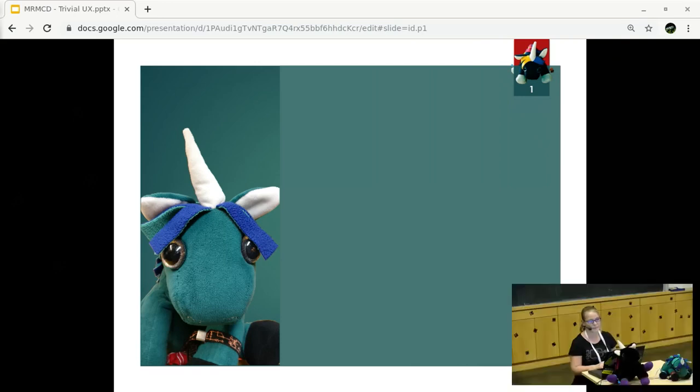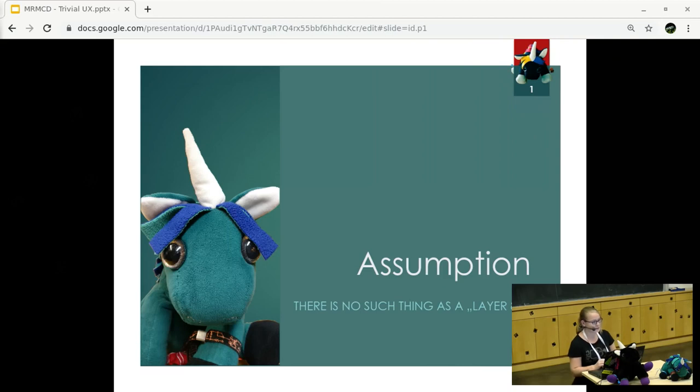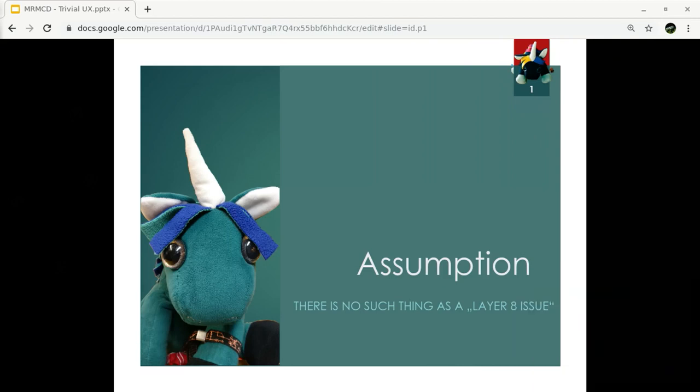So first of all, we've talked about the player, but now let's talk about the rule of this game. There is one basic rule which you have to follow when it comes to user experience, and this is there is no such thing as a layer 8 issue when it comes to user experience and usability. This is a really important rule, so whenever you find that the user is not doing what you expected him to do, it's not an issue of the user, but it's an issue of the product, software, or whatever you are doing. This is really important to understand because only if you really follow this rule you will be able to create a good user experience. And here the unicorn is asking, well, does it mean it's all the fault of the unicorn? In this case, obviously it is.